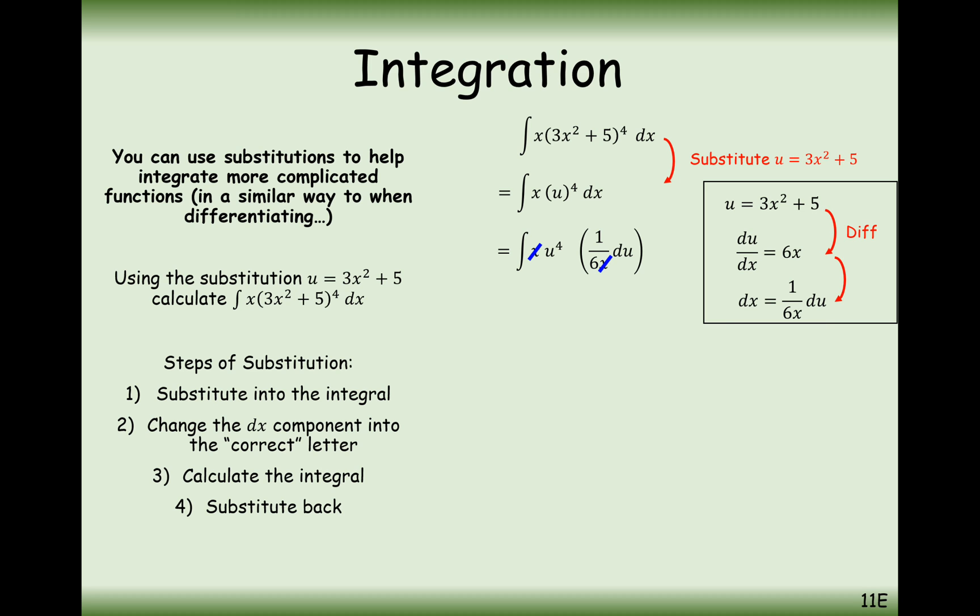What you'll sometimes find is that there'll be a factor at the front that will only cancel out when you do your du dx substitution. In this case, it's just now going to be a sixth integral of u to the power of 4.